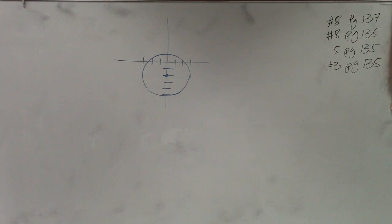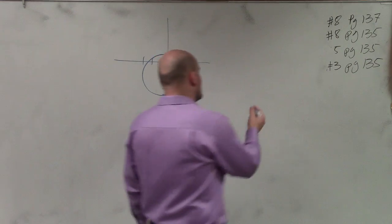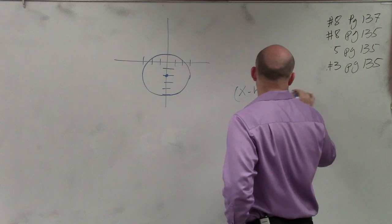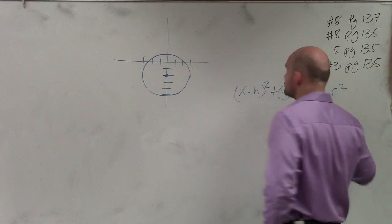To write the equation of a circle in this case, we have to know what the equation of a circle is. The equation of the circle is (x - h)² + (y - k)² = r².